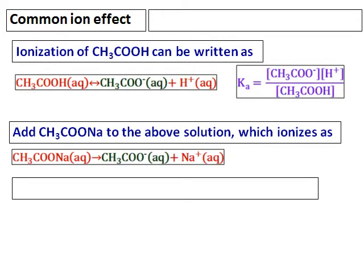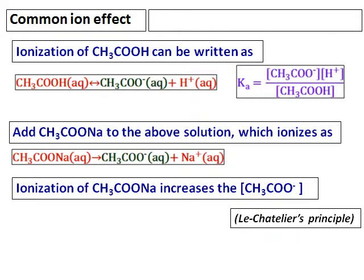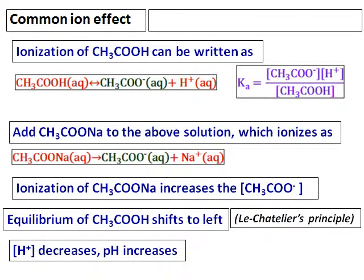Since sodium acetate ionizes completely giving acetate ion, this acetate — if you look at the equilibrium equation — is increasing the concentration of acetate ion. Therefore, if I apply Le Chatelier's principle, I am increasing a product. Therefore, the reaction will shift towards the left, going towards acetic acid, and hydrogen ion concentration decreases, which decreases the ionization of acetic acid.